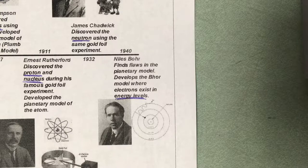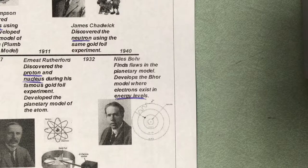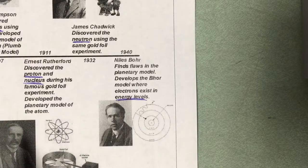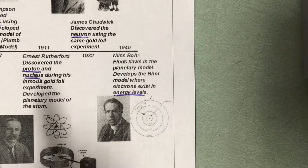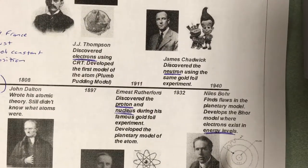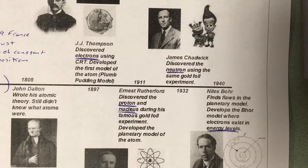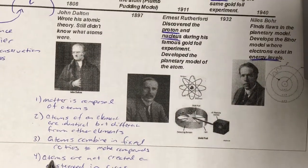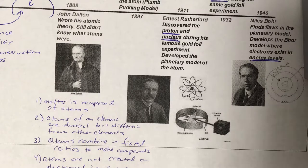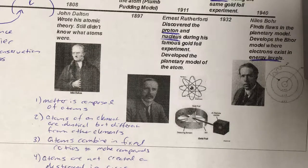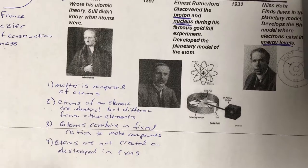Go back to that table sheet I'm going to give you back. Fix the stuff you need to fix. The biggest issues were what Thompson, Rutherford, Chadwick, and Bohr each discovered — there were a lot of mistakes on the timelines about what they did. Also, many of you left off the fourth point of Dalton's atomic theory; it was on a separate slide. Make sure you've got it, fix it, study it — this is what you're going to be quizzed on.